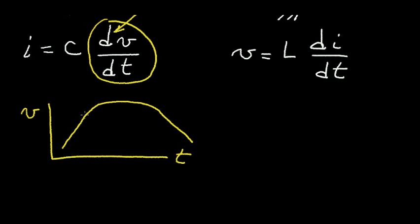For example, if I take this point right here and I want to find the dV/dT, or the slope, it would be a line drawn like this. If I want to find the slope over here, it would be a line drawn along here — this would be the slope. If I want to find the slope right at the top, the slope would be flat. The slope would be essentially zero.